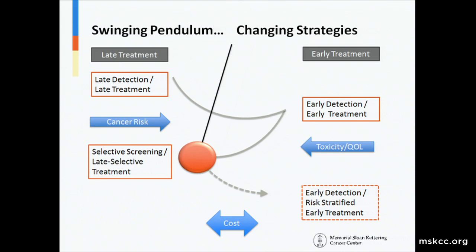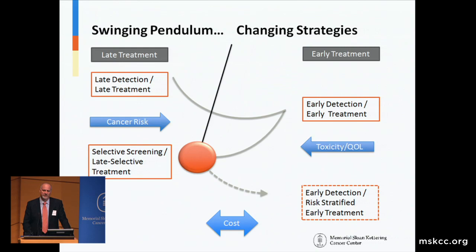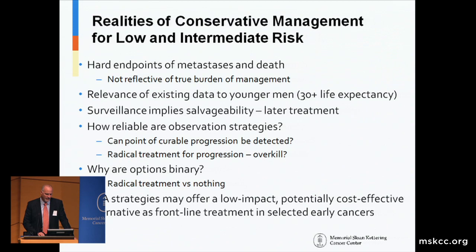This can be thought of as a swinging pendulum — the back and forth in approaches to managing cancer. In the 1950s and 60s, we detected cancers late, and treatment was provided late. As we shifted toward early detection, we developed early detection and early treatment as a model, and we did see a bend in the mortality curve. However, toxicities and quality-of-life impacts shifted us back toward selective screening and late selective treatment. Now the question is whether we are moving toward early detection and early risk-stratified therapies, and hopefully we can hone in on a patient population that may benefit from early, less-impactful therapies such as focal therapy.